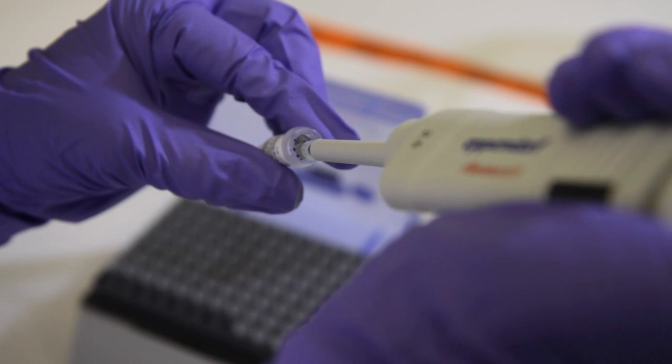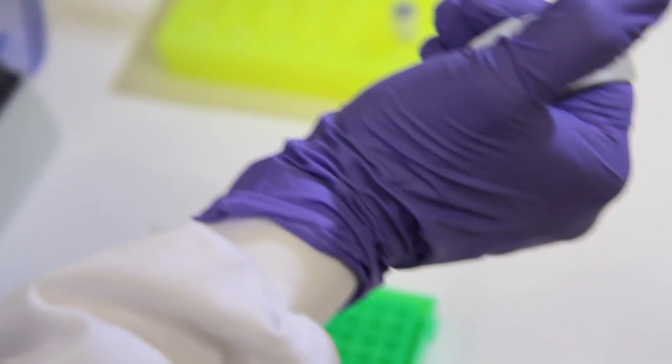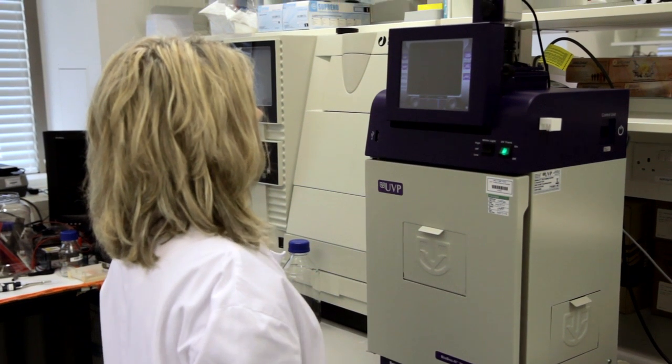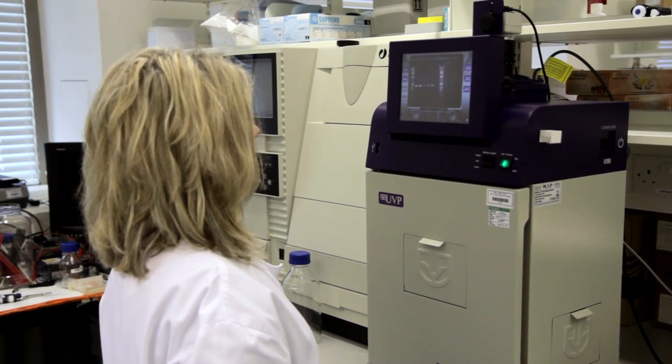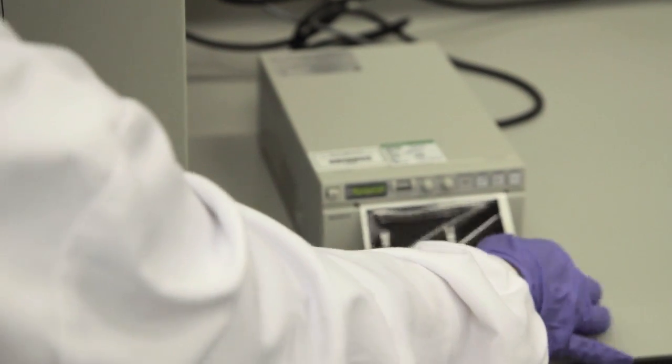Add the required amount of loading dye to your PCR tube, 1 microliter for 5 microliters of PCR reaction or 5 microliters for 50 microliters PCR reaction depending on the concentration of the PCR. You cannot always judge this perfectly in the first instance and may need to run another gel with an adjusted amount if you want a really good picture.